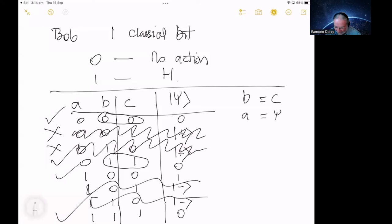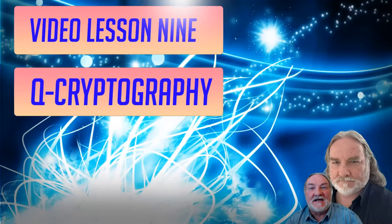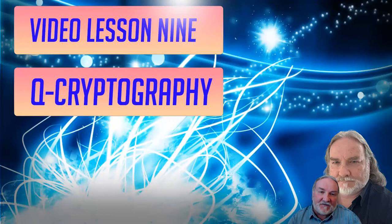So what happens is Alice and Bob check their respective results. And if B and C are the same, then Alice will add A to her key, and Bob will add D to his key. And they will always be the same, the outcome of his qubit. They will always be the same. So if B and C don't equal, then they discard that qubit.